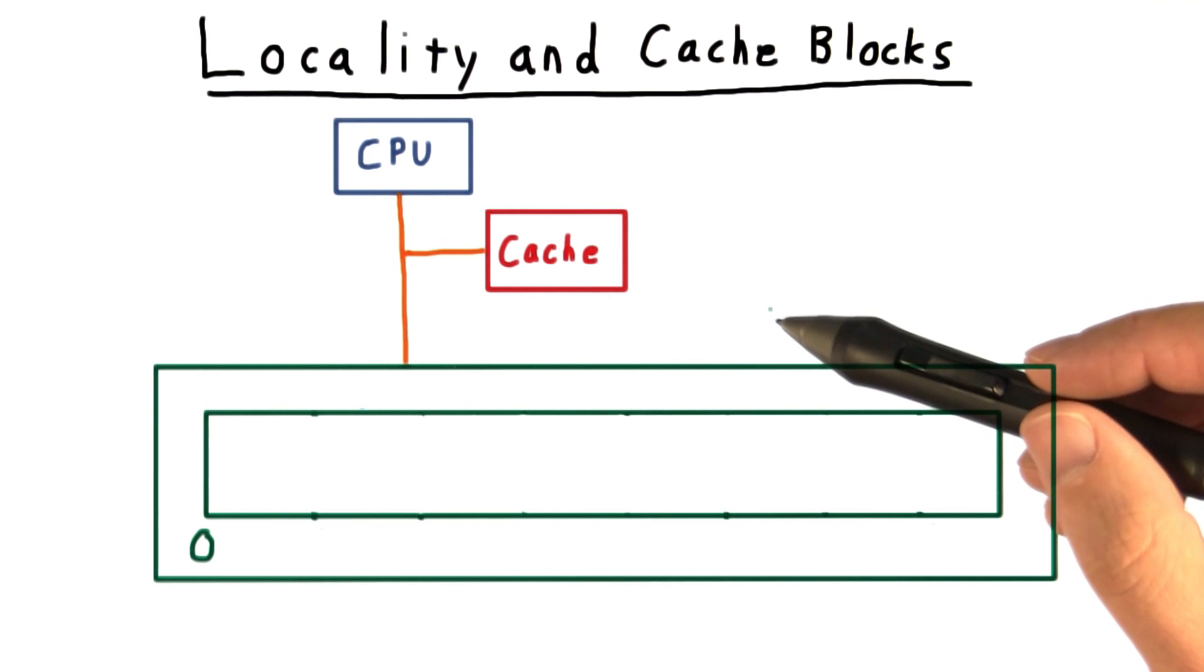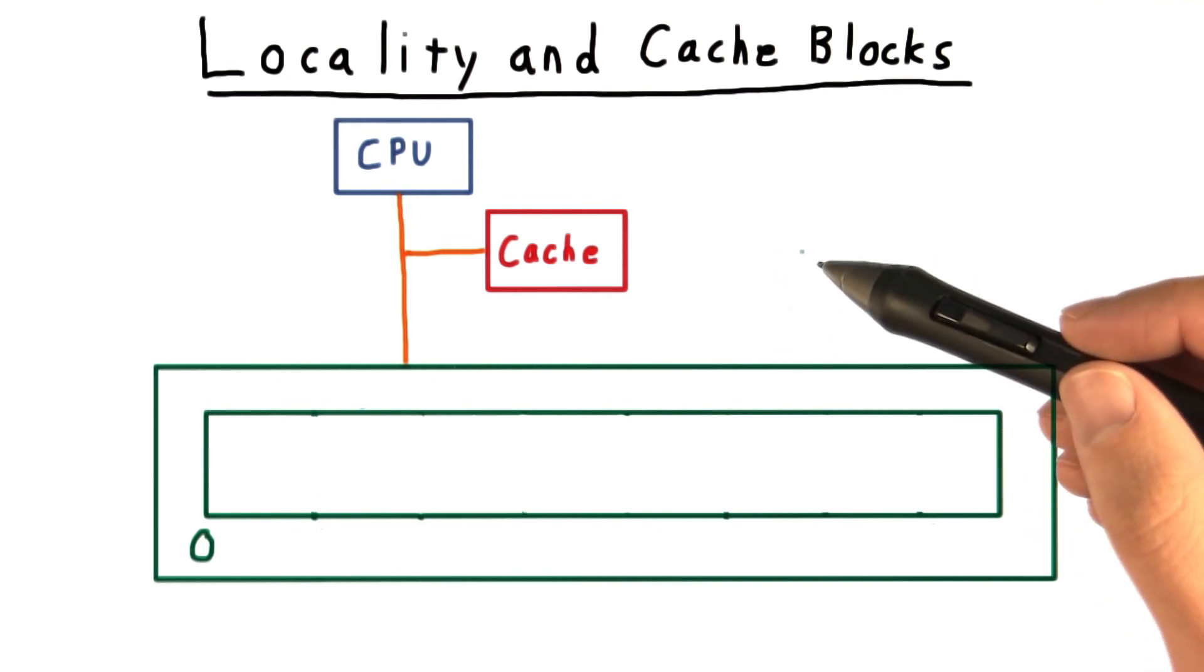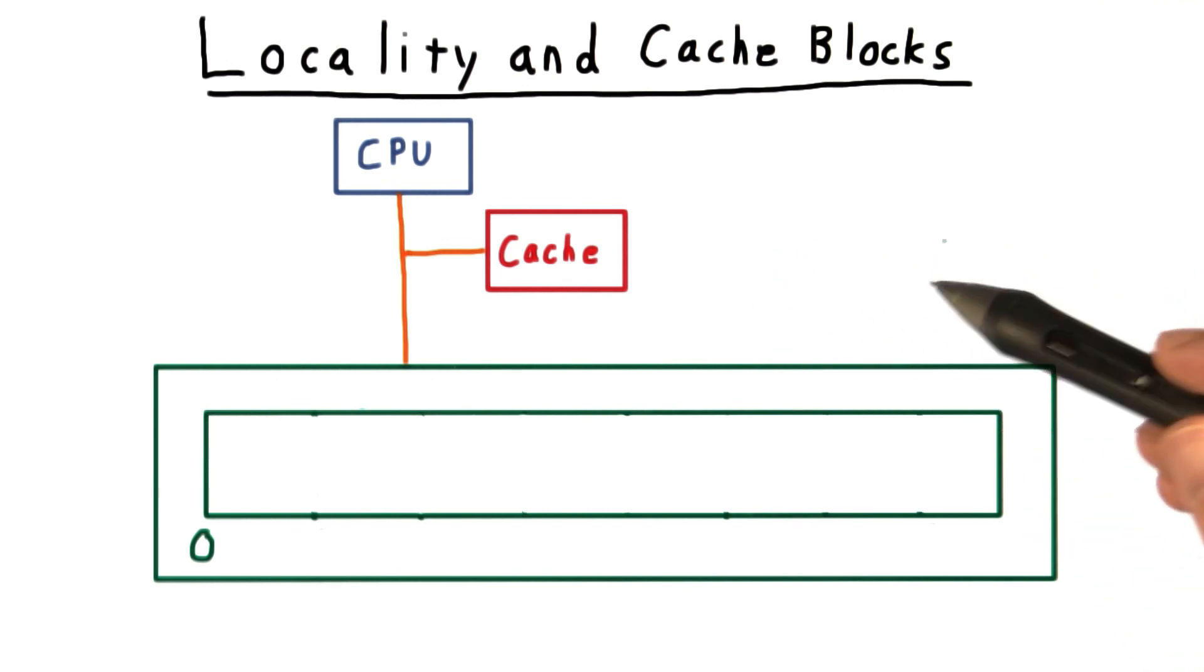Ideally, we would be able to look ahead in the code and plan ahead. But so far, this has proved impractical. Instead, we use the heuristic of locality.